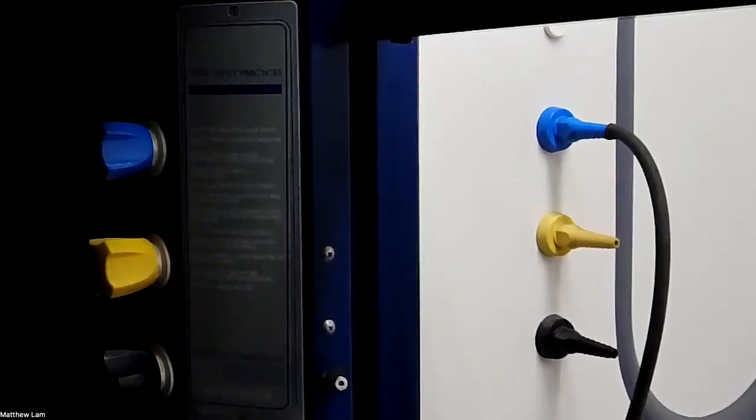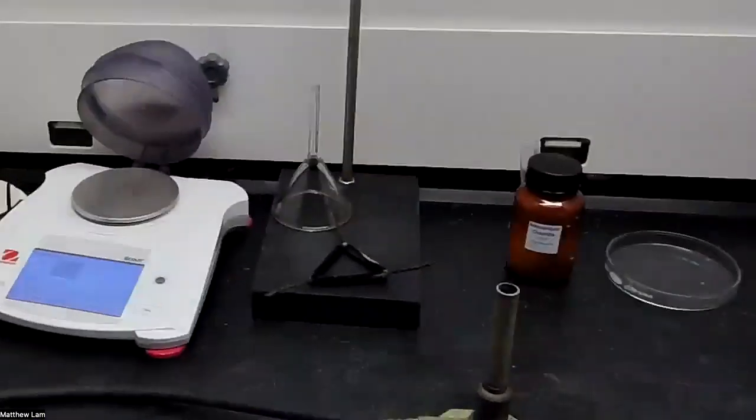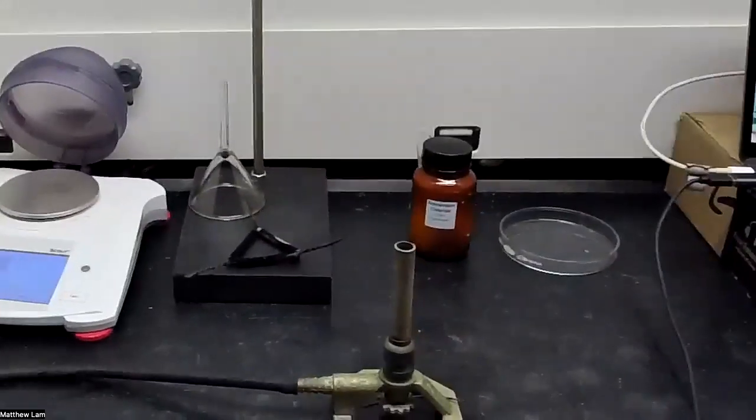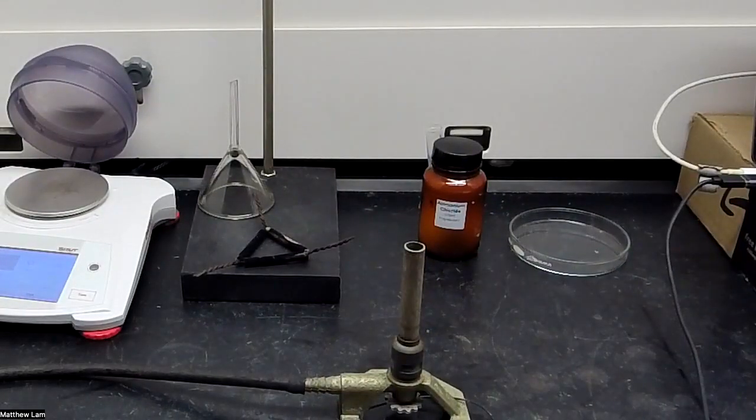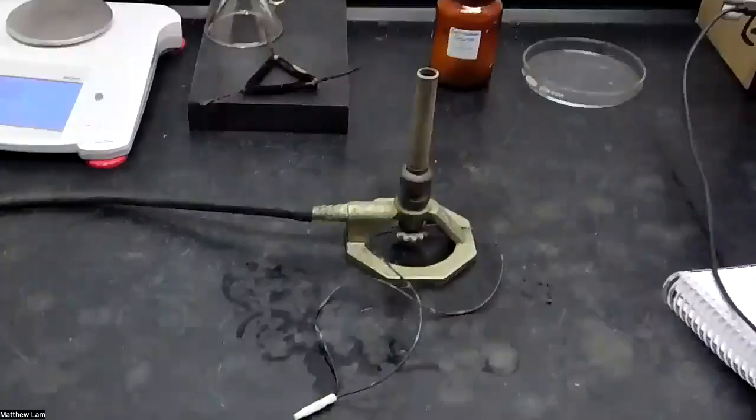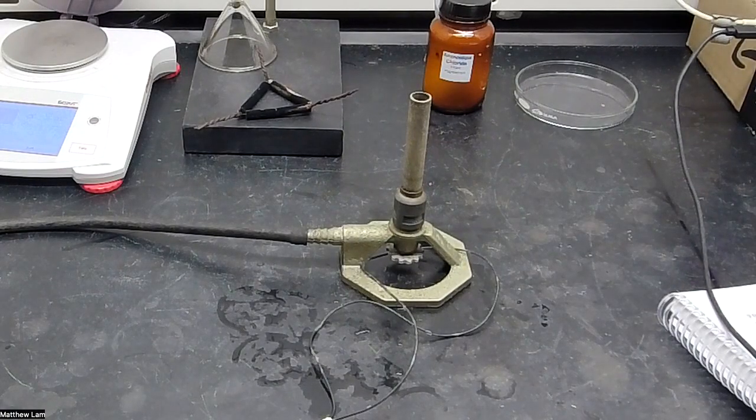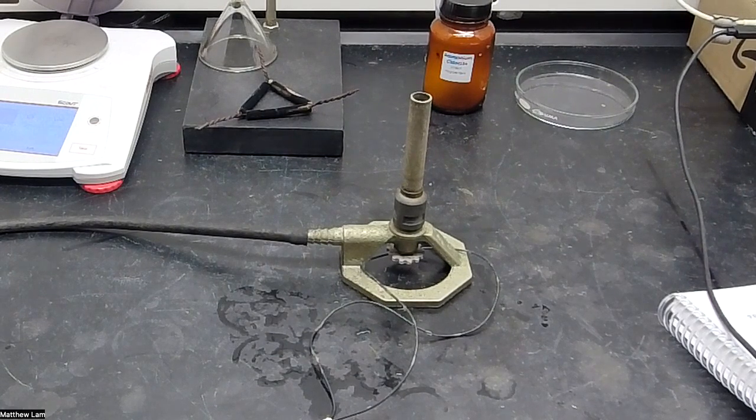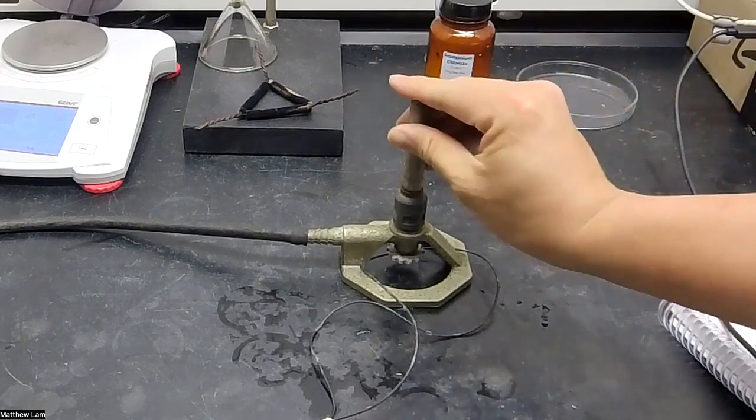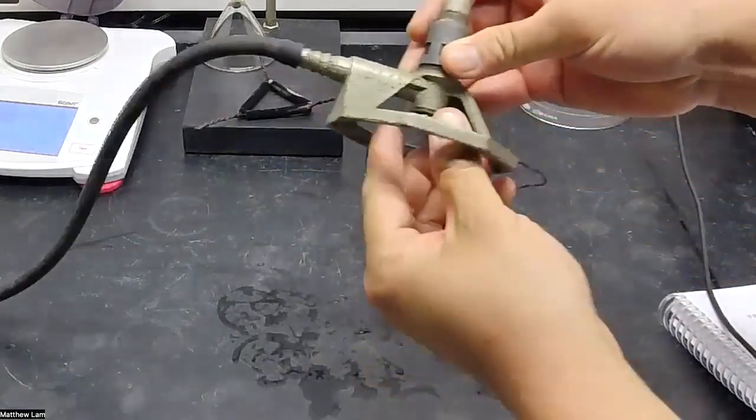The gas line is controlled by that blue knob over there, but you can also control the amount of gas that is put into the Bunsen burner. So if I turn this blue gas knob up here, which you can't see, gas should start coming out.